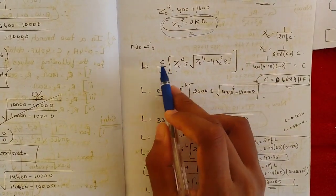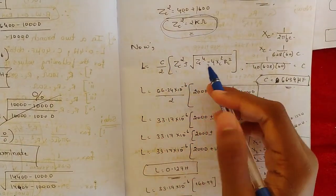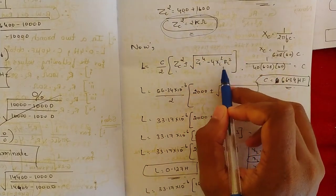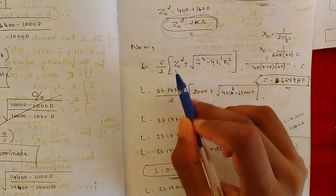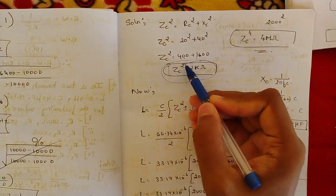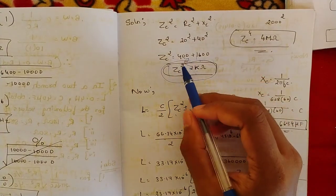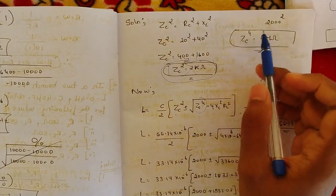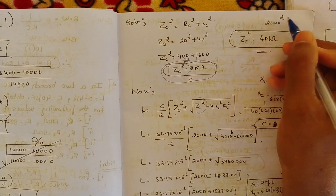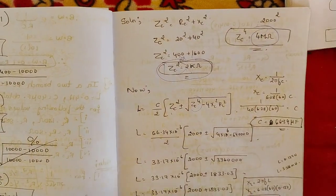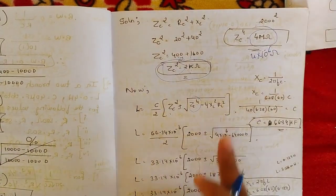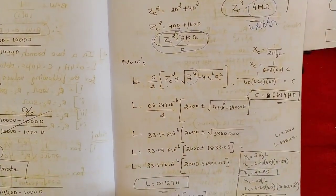First, ZC² = RC² + XC² = 20² + 40² = 400 + 1600 = 2000 ohms². To find L for resonance, we use the formula: L = C / 2 × [ZC² ± √(ZC⁴ − 4·XC²·RL²)]. We need ZC⁴: squaring ZC² gives (2000)² = 4 × 10⁶ ohms⁴.